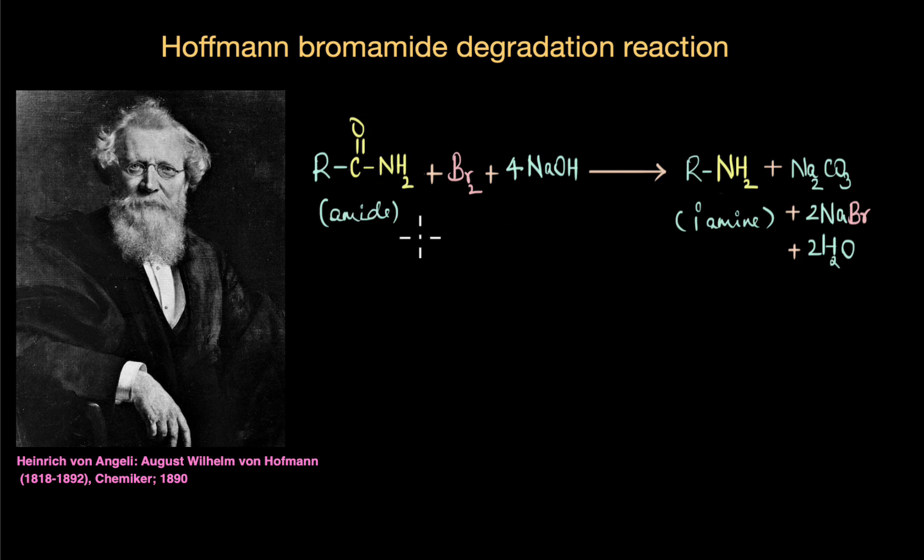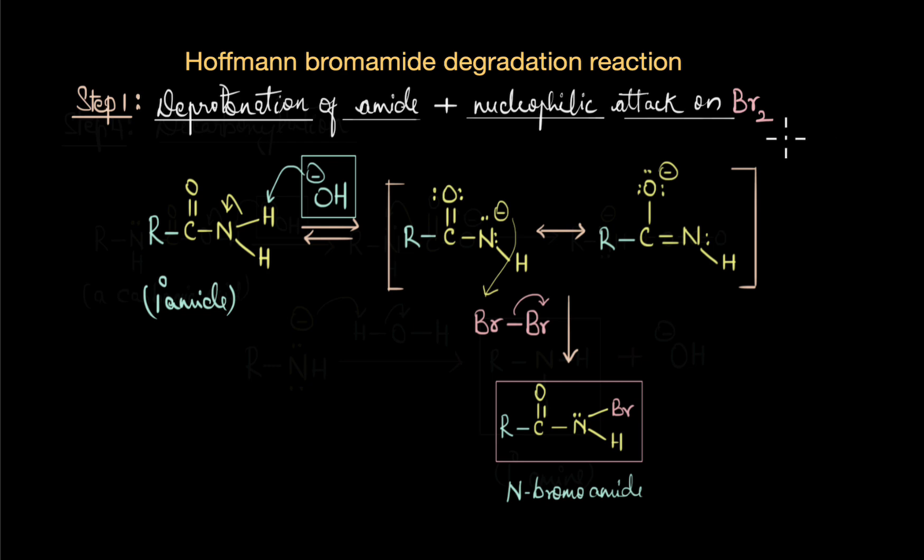Let's now deep dive and see what exactly is happening in this reaction. The first step is a deprotonation step where we deprotonate the amide followed by a nucleophilic attack on bromine. The hydroxide abstracts one of the hydrogen atoms from the amide. This is possible because these hydrogen atoms are acidic, being attached to an electronegative atom like nitrogen, and the carbonyl group is also electron withdrawing.